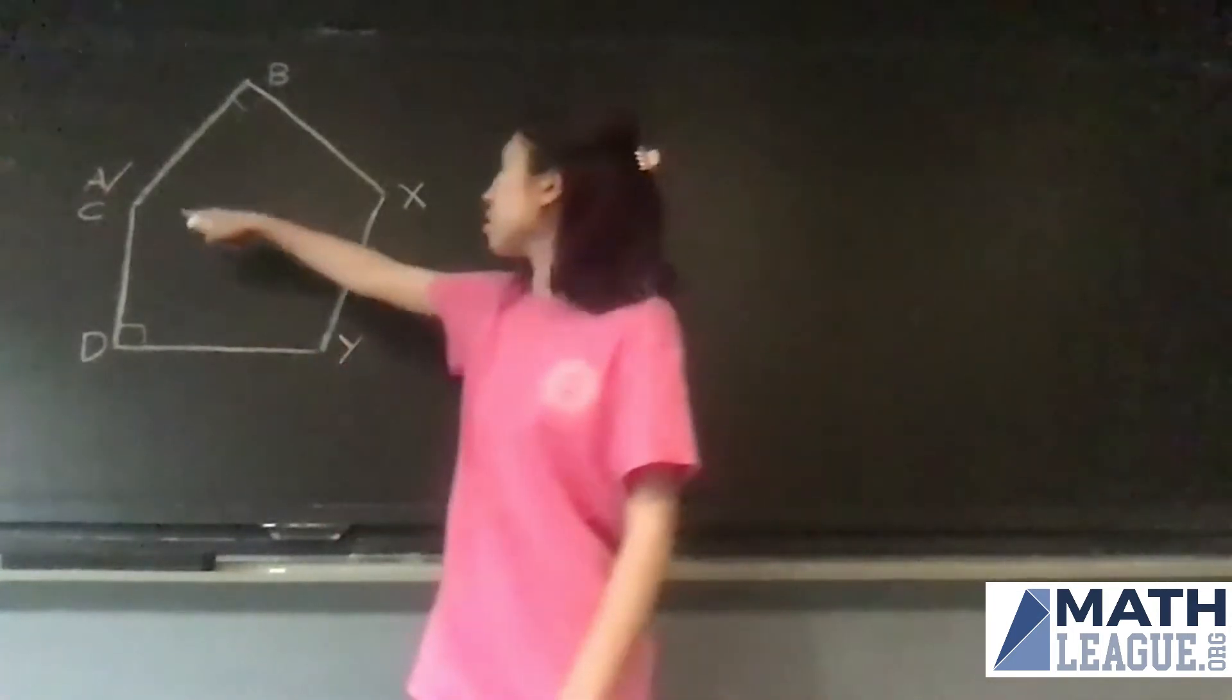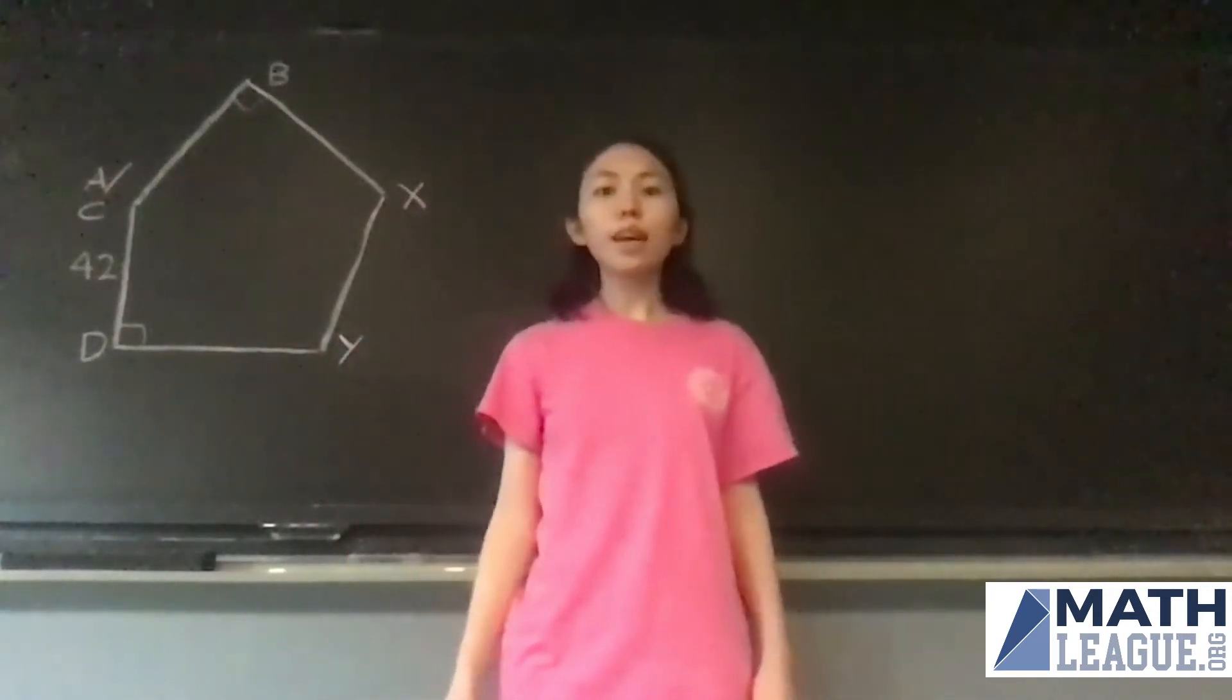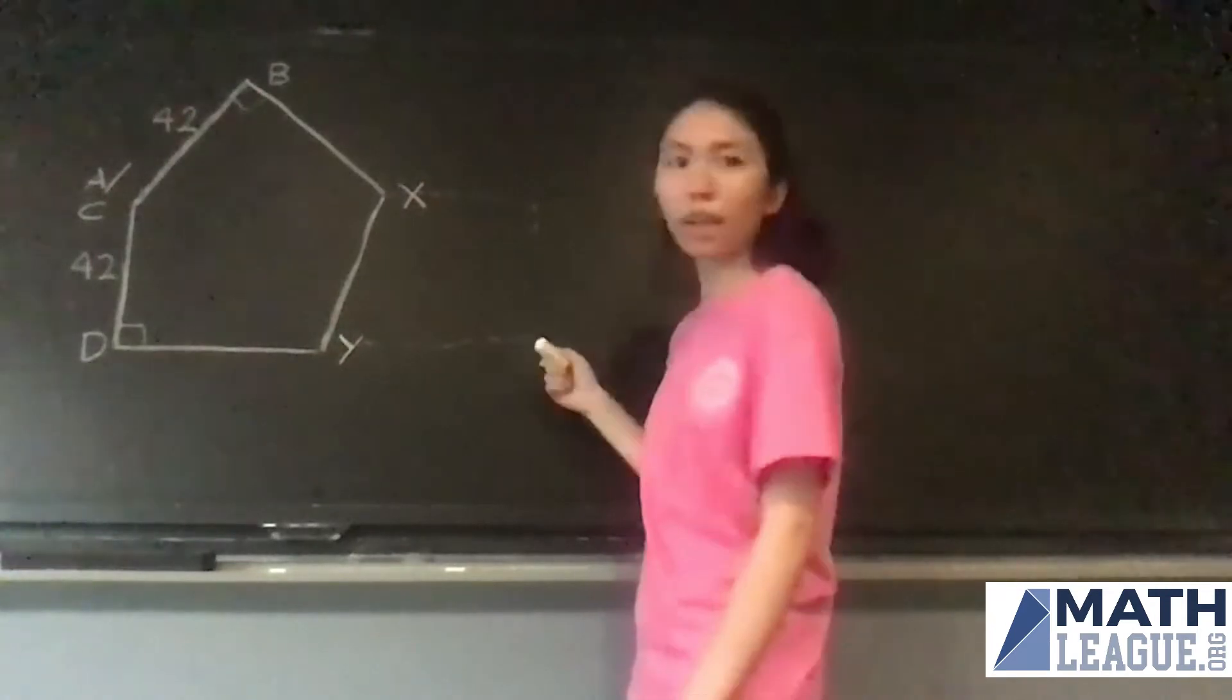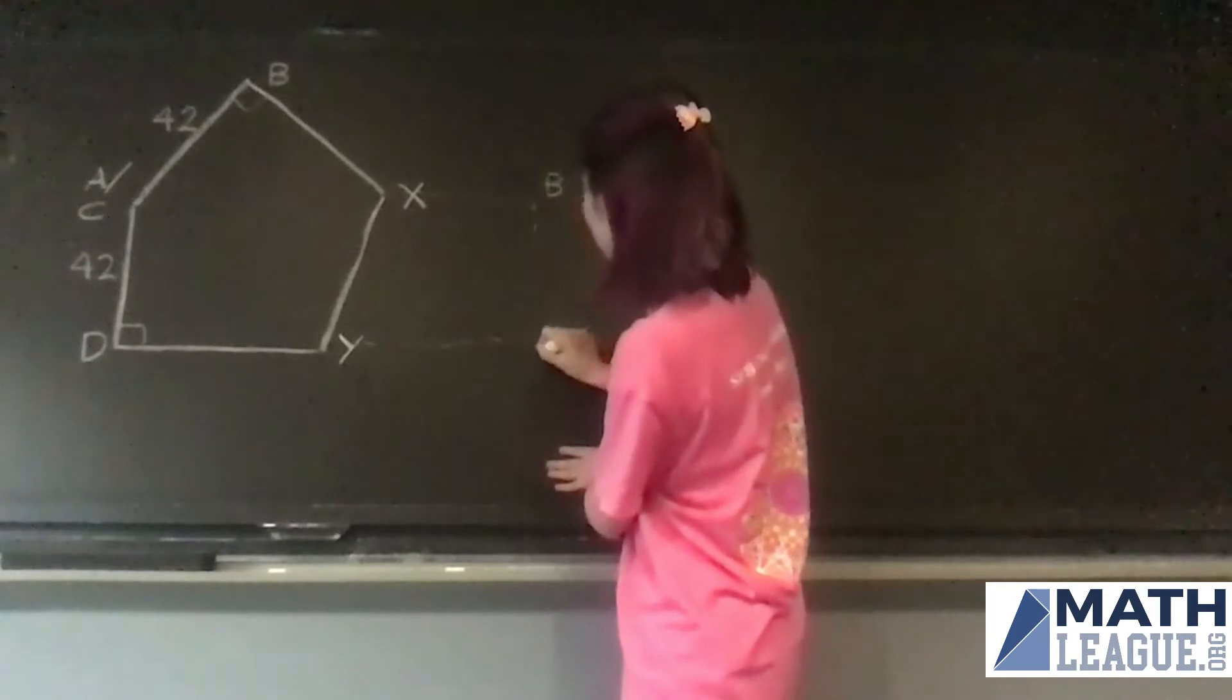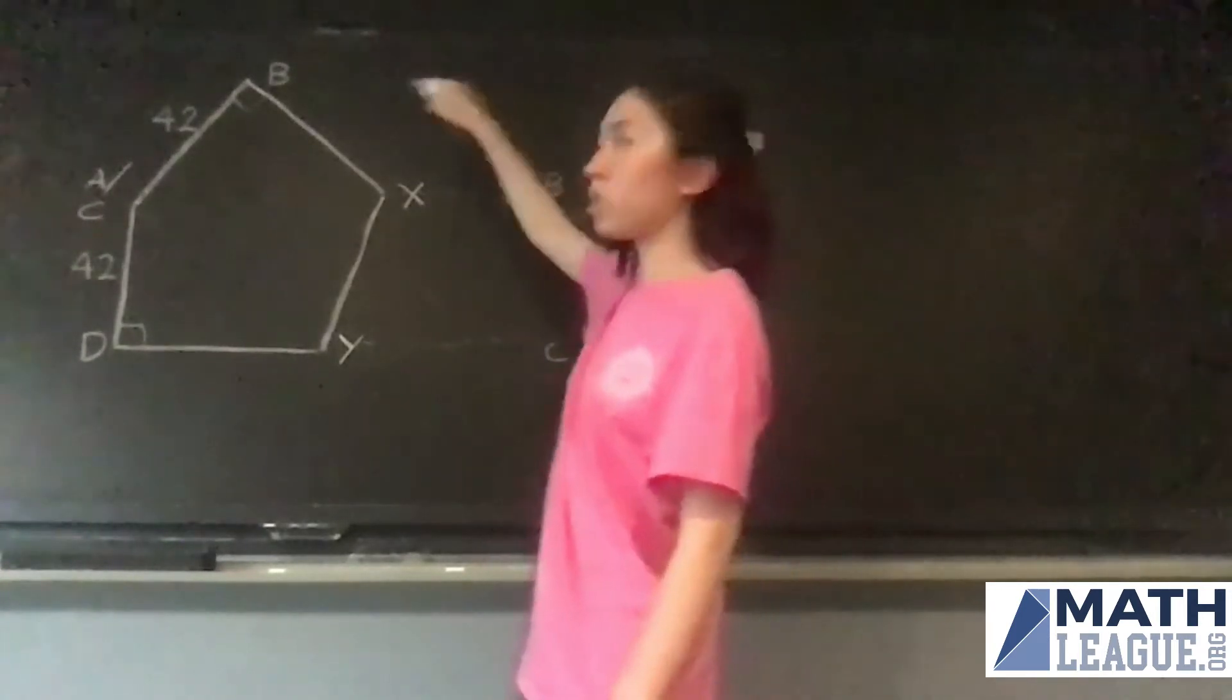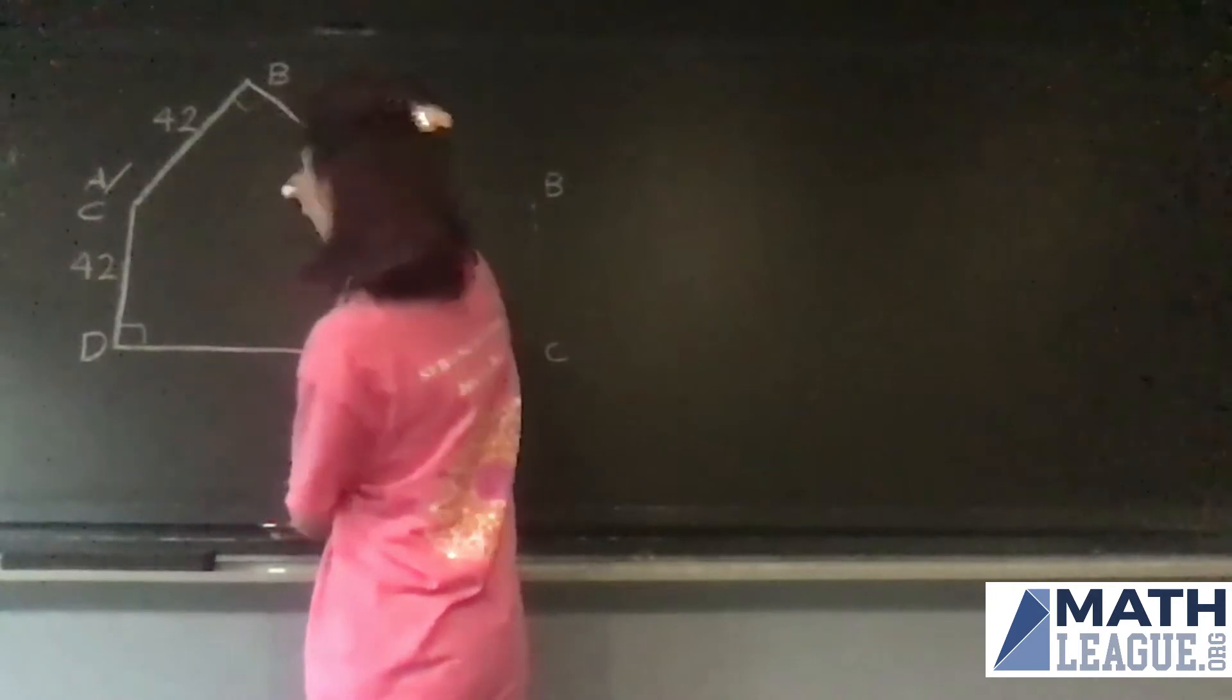So recall that segment AD, while C is now the same point, had length 42 centimeters. Similarly, we knew that segment BC had length 42 centimeters. Now remember when this paper was originally unfolded, and we had point B over here and C was over here. So when we fold the paper, this XB segment just moved from here to here. It did not affect the length of AB.